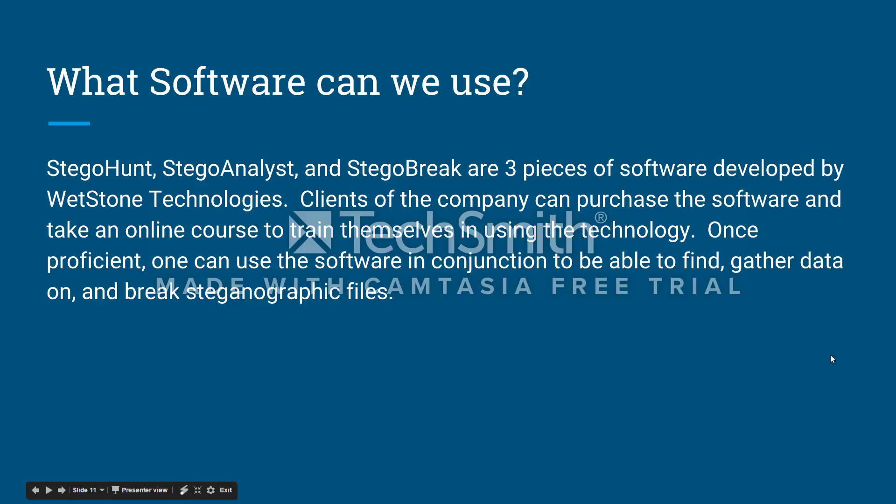As noted below each step in the previous slide, there are tools we can use to make each step much easier. Whetstone Technologies has come out with a series of three pieces of software that help with each step, as well as an online course to train users in the technology. The first program, called StegoHunt, is used to find carrier files. The second, known as StegoAnalyst, is used to analyze the potential payload and determine what it could be. The last program, StegoBreak, is used to extract the payload from the carrier file.